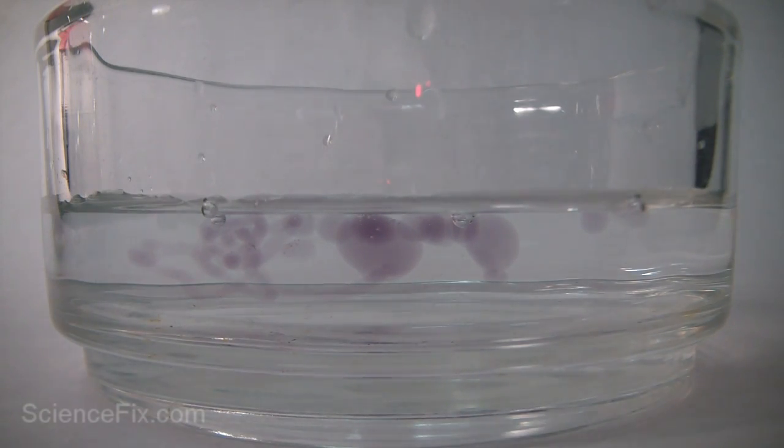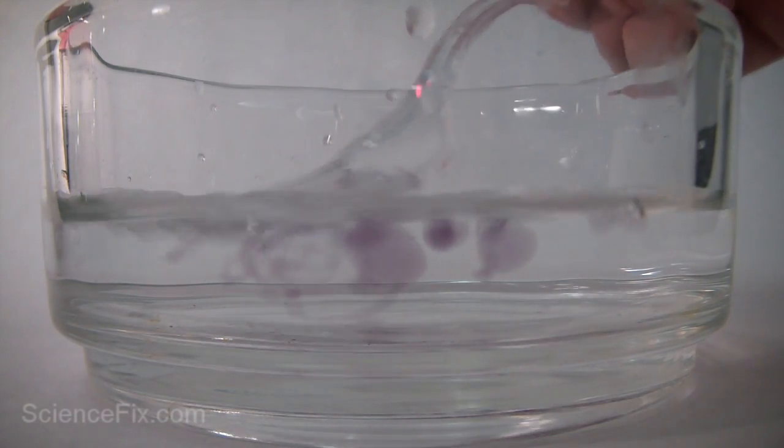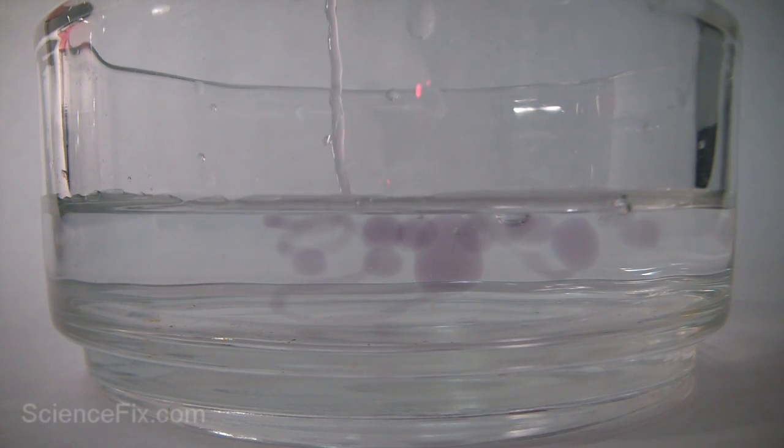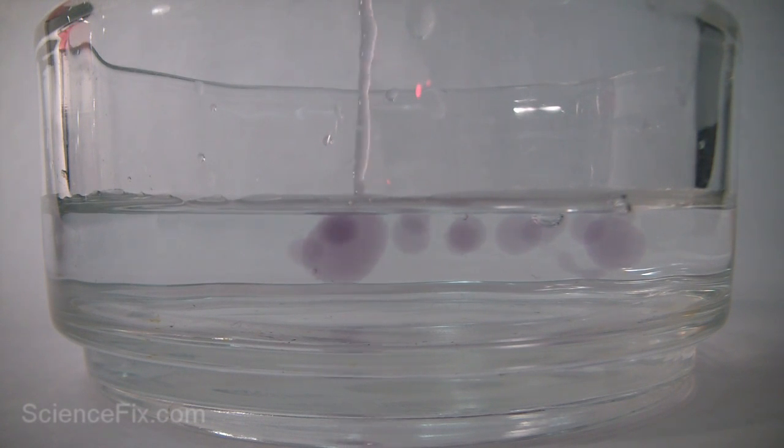You can mix in some sauces with the sodium alginate, and then you pour that into the calcium chloride solution to create spheres of sauces. Chefs will then put the sauces over foods for flavoring.